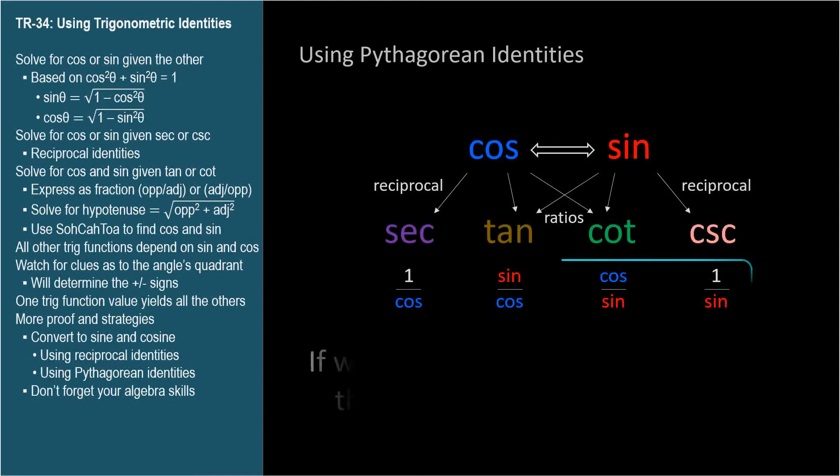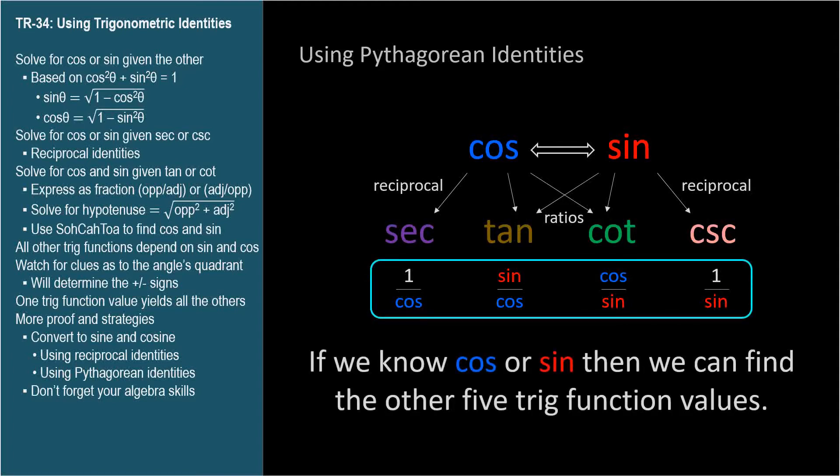So if we know cosine or sine, then we can find the other five trig function values. We'll need a little extra information about the angle to help us determine positive negative signs. In the previous example, we knew the sine function must be positive because we were told the angle was acute.